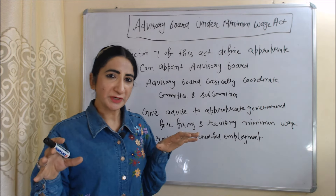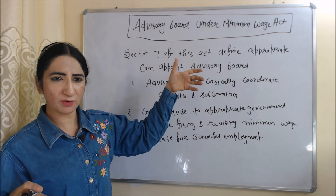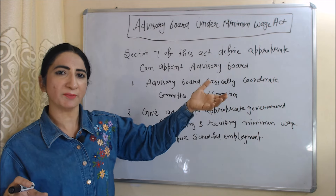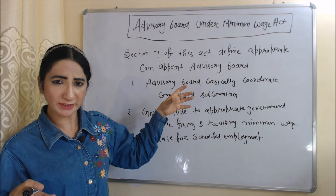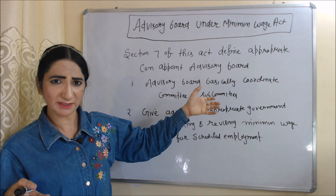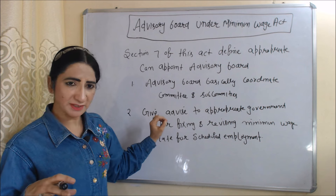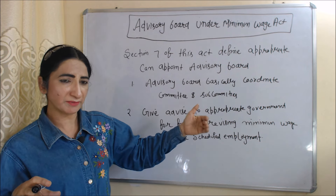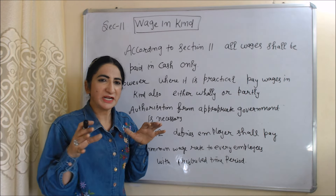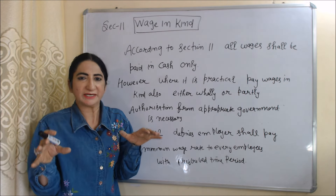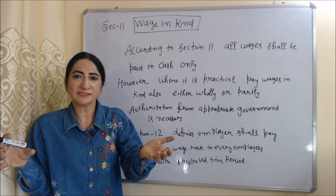Now we are going to talk about the advisory board under the Minimum Wages Act. Section 7 of this act defines that the government appoints an advisory board. This advisory board basically coordinates with the committees and subcommittees discussed under Section 5. This advisory board also advises the appropriate government for fixing and revising wage rates for scheduled employment.